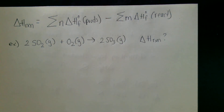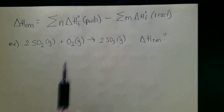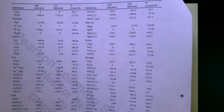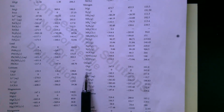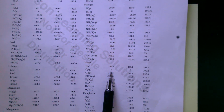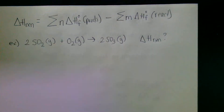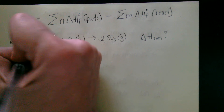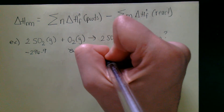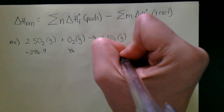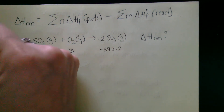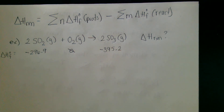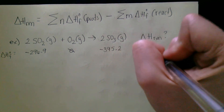We also need to look up oxygen. Oxygen is in its standard state — O2 gas has an enthalpy of formation of zero, as it's an element in its standard state. So our looked-up values are: SO2 = negative 296.9, O2 = zero, and SO3 = negative 395.2. Units are kilojoules per mole.